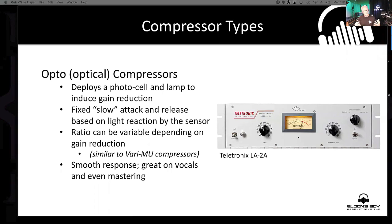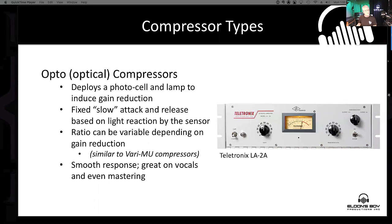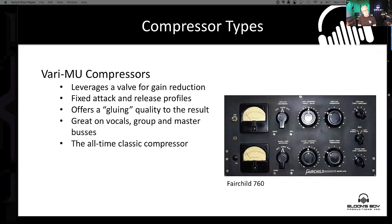I see guys fall short on opto compressors when using them on instruments because they're not realizing that as they go deeper into threshold they're actually changing the ratio being used, even though they don't have control over it. I'm going to give you an actual audio example of these topology differences today. The key point is: all of these characteristics are being modeled in plug-in form, so the principles apply.